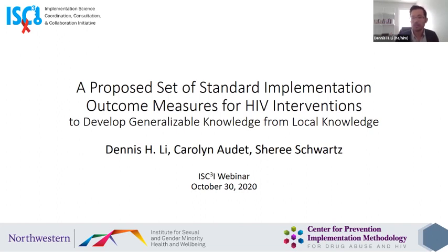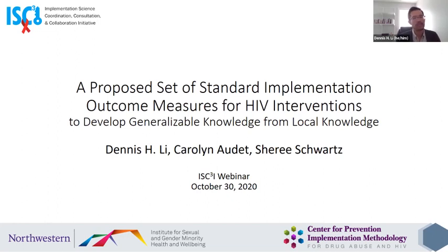I'm very excited to have you all here and talk to you about this proposed set of standard implementation outcome measures for HIV interventions that we have been working on through ISCII. For those of you who don't know me, my name is Dennis Lee. I'm an assistant professor at Northwestern University in Chicago, Illinois, and today I'm joined by two colleagues, Carolyn Audet, who is assistant professor in the Department of Health Policy at Vanderbilt, and Cherise Swartz, who's an assistant scientist in epidemiology at Johns Hopkins.